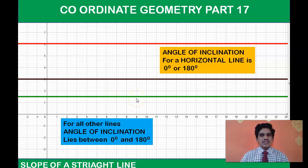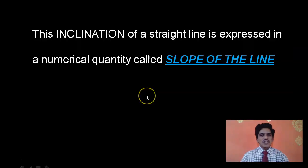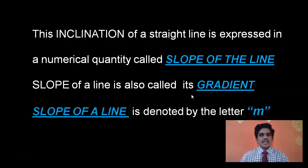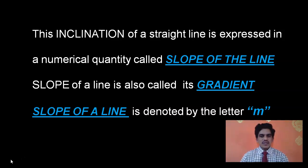Here we have to discuss an important mathematical concept of a straight line called the slope. We relate the angle of inclination to a constant for a straight line, which is called the slope of the line. Slope is a numerical value — a real number. The slope is sometimes also called the gradient. The slope of a straight line is denoted by the letter M.